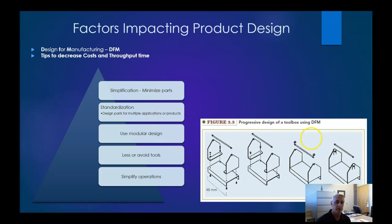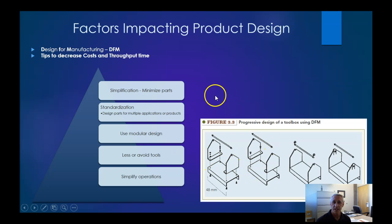Reducing the number of assembly steps simplifies throughput time and lowers costs. Using a modular design, trying to use fewer or no tools — seen in a lot of manufacturing — though sometimes that makes customer maintenance more difficult. There are pros and cons depending on the product type. You can also make parts usable across multiple products, giving you standardization across several product lines.